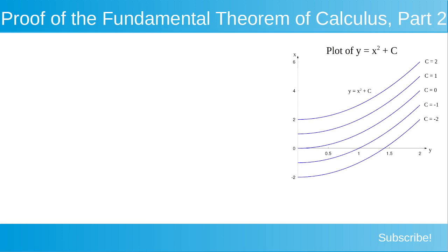If we look at our plot on the right-hand side of the screen, here we have the plot of five different functions — the plot of y equals x squared plus c. At the topmost function, y equals x squared plus c where c equals 2. The next function below that is y equals x squared plus 1. Below that is y equals x squared plus 0. Below that is y equals x squared minus 1. And the bottom function is y equals x squared minus 2.